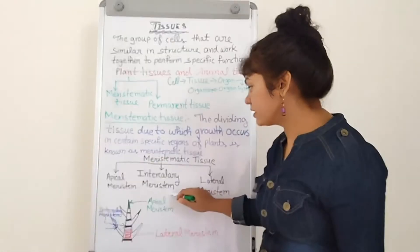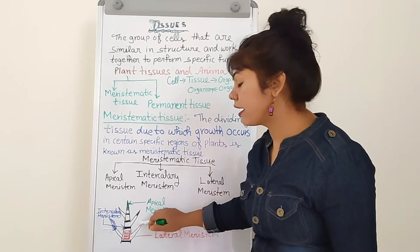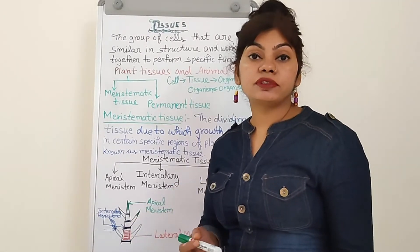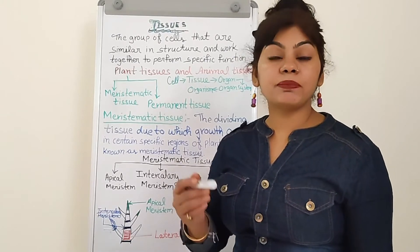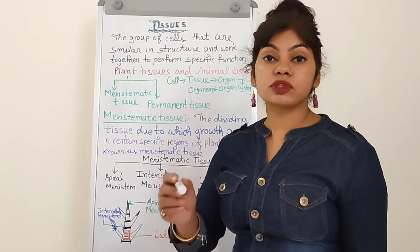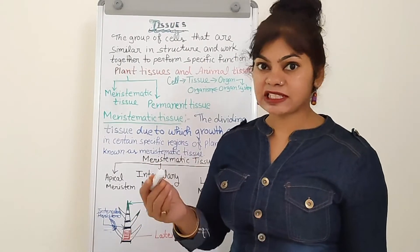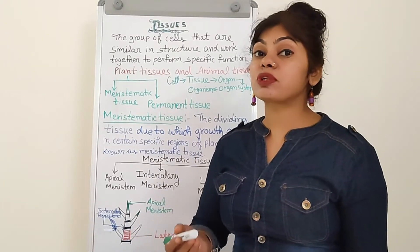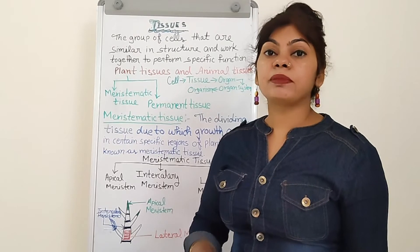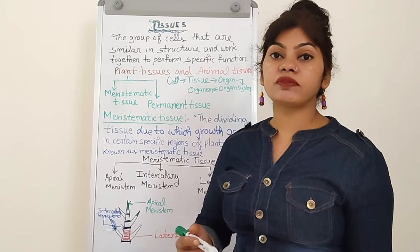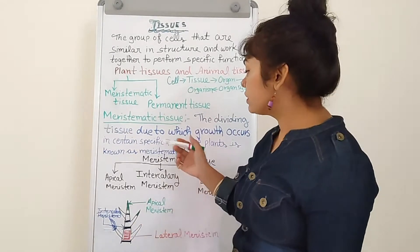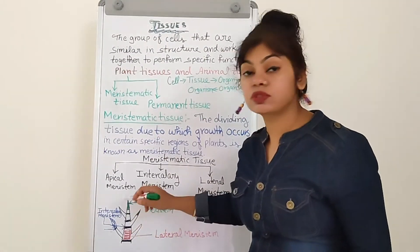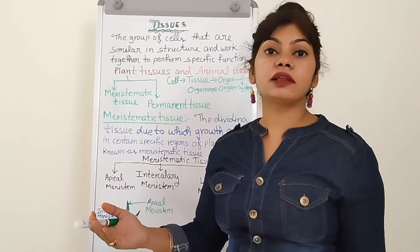Intercalary meristem is present at the internodes and at the base of the leaf. It is responsible for the elongation — meaning it increases the length of the stem between the nodes.